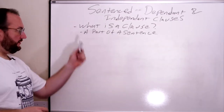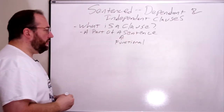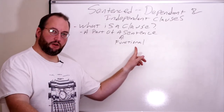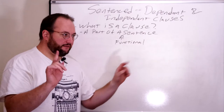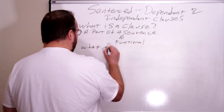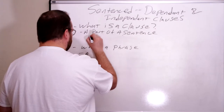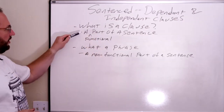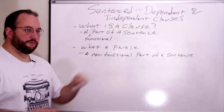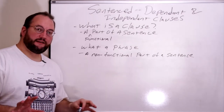A clause is a part of a sentence — that's it. It's a functional part of a sentence. This is vitally important to understanding what a clause is, because there's another thing that looks like a clause and that's called a phrase. So a clause is a functional part of a sentence, and a phrase is a non-functional part of a sentence. That's how we differentiate them.